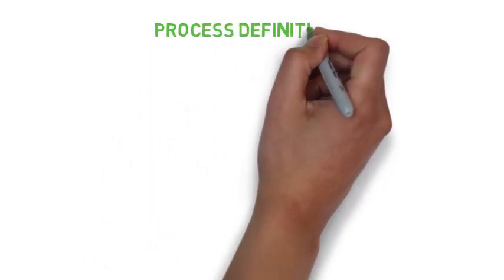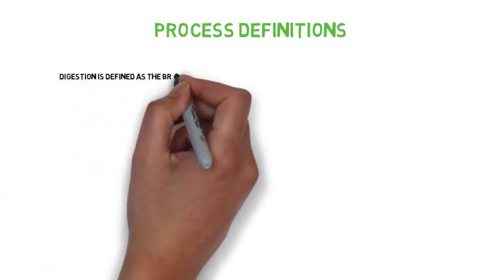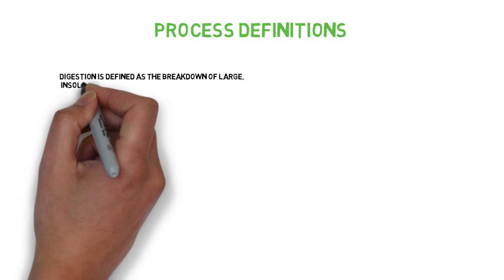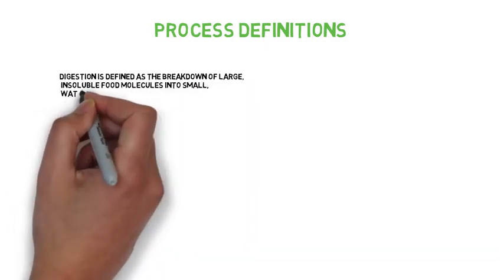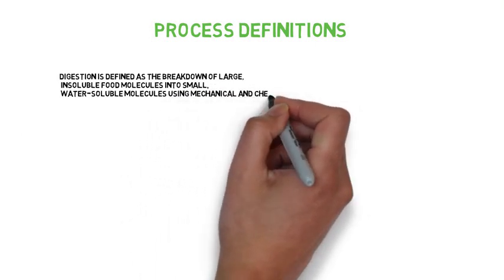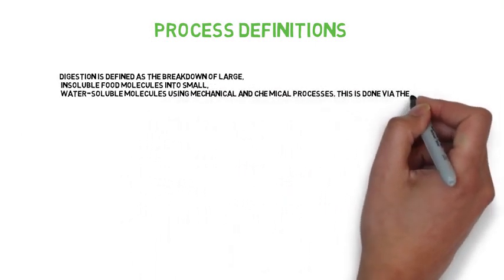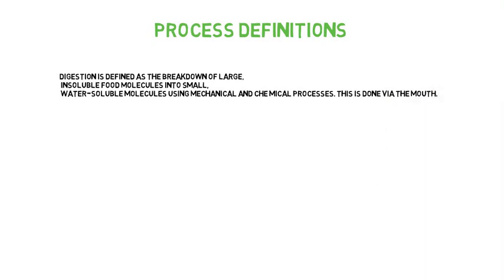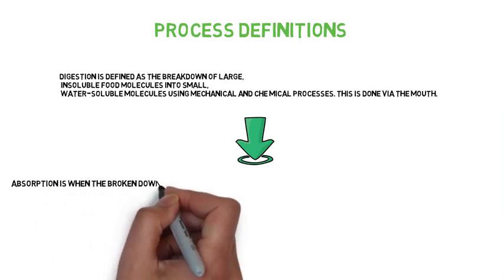Process definitions. Digestion is defined as the breakdown of large insoluble food molecules into small water-soluble molecules using mechanical and chemical processes. This is done via the mouth. Absorption is when the broken-down nutrient molecules are absorbed into the blood or lymph through the gut wall.